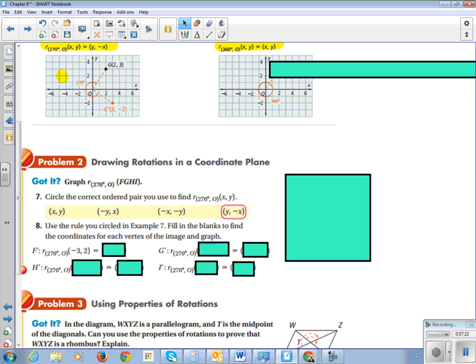So if I'm at negative 3, 2, I switch the negative 3 and the 2, and I make the second one negative. So I switch the negative 3 and the 2, and go to 2 negative 3, and then I change the sign of the second one.